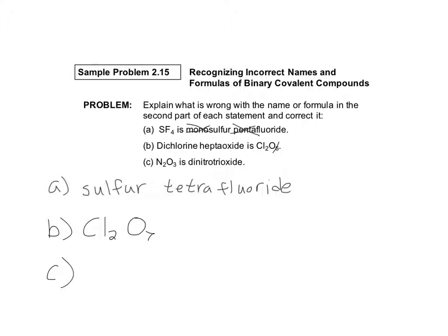C part, N2O3. This time the formula is correct. The name is incorrect. They're saying this is dinitrotrioxide. Let's see what's going on here.